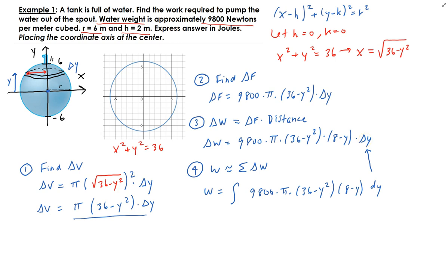And our bounds are going from minus 6 to 6, since we're interested in finding the work of the full tank. Now if you want, you can actually split this up or you can double the result. You can integrate from 0 to 6 and then just double the result. That should give you the same answer.